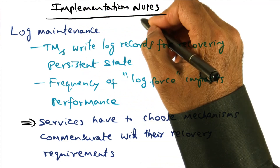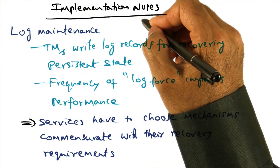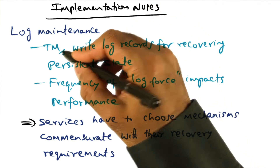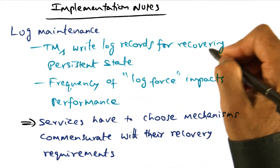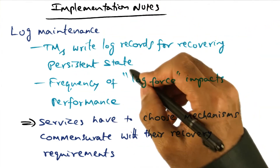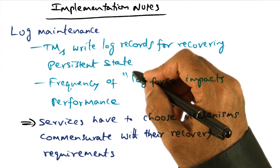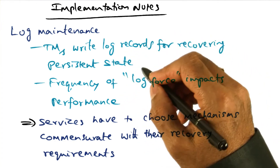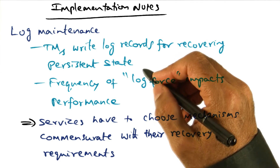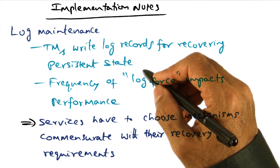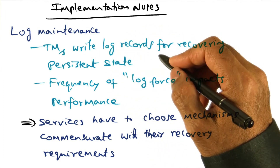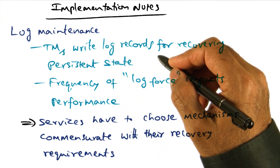One of the key aspects of Quicksilver implementation is log maintenance. The transaction managers write the log records for recovering the persistent state. They're written into log records that are in-memory data structures of the transaction manager. And every so often, the transaction managers do a log force of the in-memory log segment to storage for persistence.